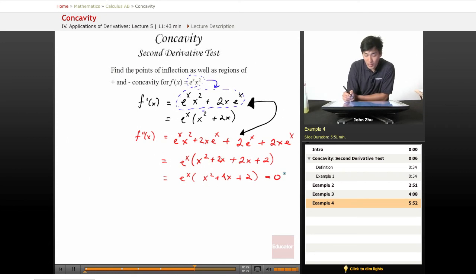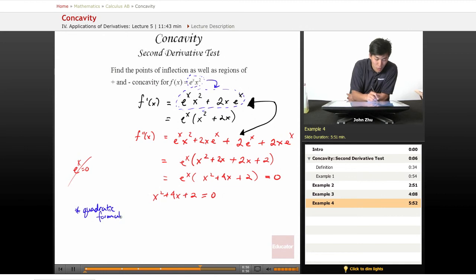So e to the x equals zero—e to the x cannot equal zero. So x squared plus 4x plus 2 equals zero. Well we're just going to have to use the quadratic formula because we can't factor this out. And we get x equals negative 2 plus or minus square root of 2.